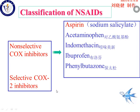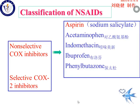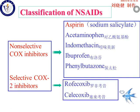Because COX-2 is an inducible COX, it usually has elevated activity during the process of inflammation. So selective COX-2 inhibitors, compared with non-selective inhibitors, have relatively fewer adverse reactions. This group includes rofecoxib and celecoxib.